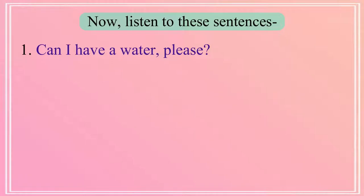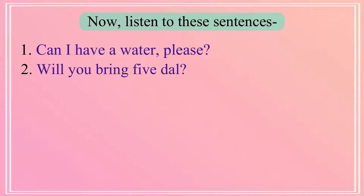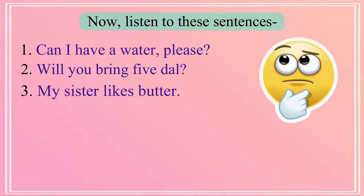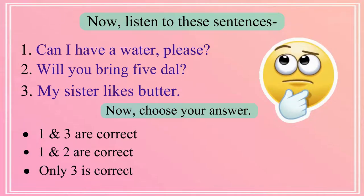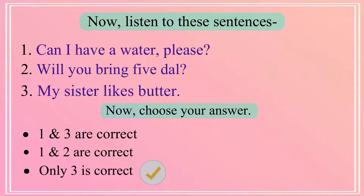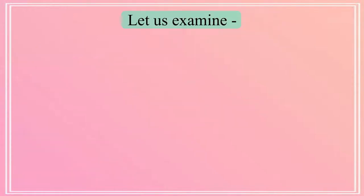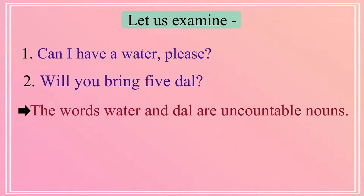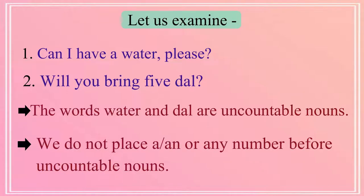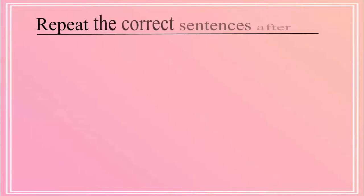Now listen to these sentences: Can I have a water please? Will you bring five dal? My sister likes butter. Are these sentences correct? The correct answer is option three — only the third sentence, 'My sister likes butter,' is correct. Water and dal are uncountable nouns, and we do not place 'a', 'an', or any number before uncountable nouns.